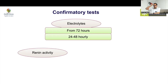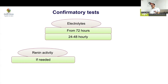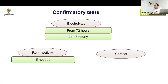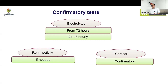Renin activity can be helpful: if it is high, you are mineralocorticoid deficient, and even in a simple virilizing form you need to give mineralocorticoid. However, don't measure renin activity in everyone — if the patient already has hyponatremia and hyperkalemia, it won't help acutely. It may help in follow-up to assess covert mineralocorticoid deficiency. Cortisol is confirmatory but interpretation is often difficult, so avoid it in the acute diagnostic scenario.